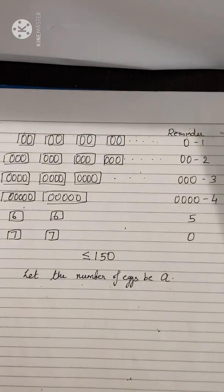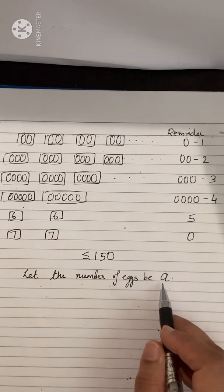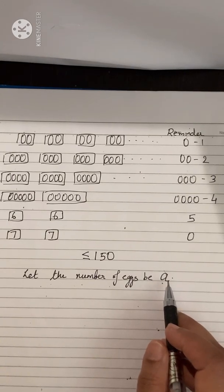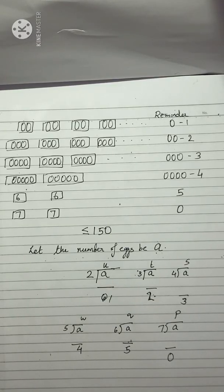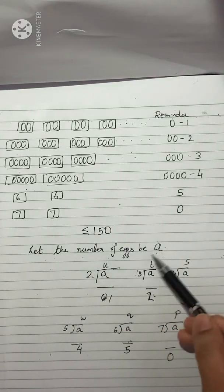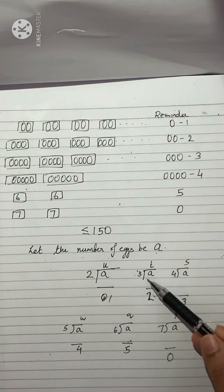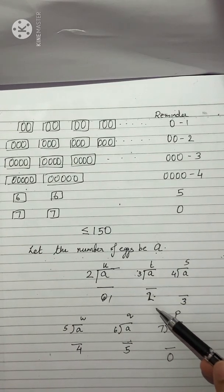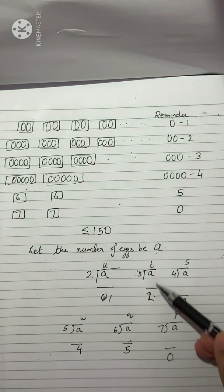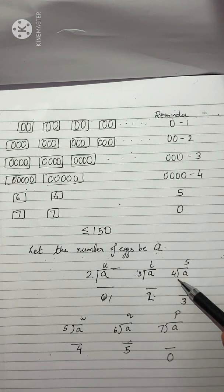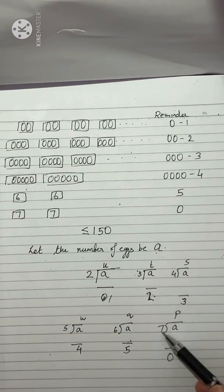So, we have to find what is the number of eggs in his basket. We don't know the number, so we take it as A and we are going to find the value of A. Hence, we can say: when A is divided by 2, the remainder is 1 and the quotient is some natural number U. Same like that, when A is divided by 3, the remainder is 2 and T is some natural number. Dividing by 4, the remainder is 3 and quotient S is some natural number. And when A is divided by 7, the remainder is 0.